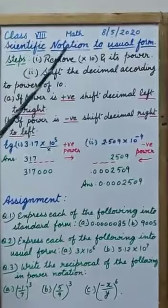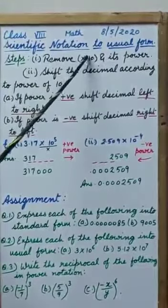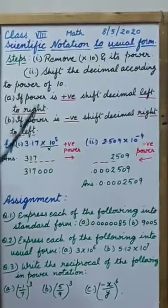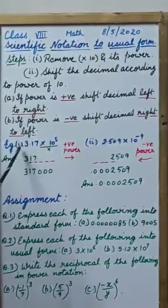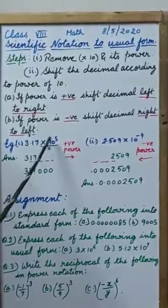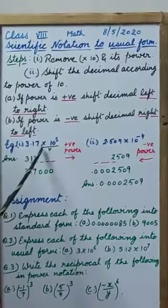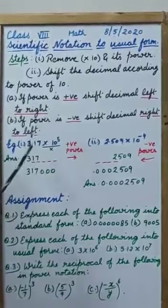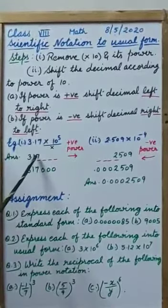First of all, we have to remove multiply by 10 and its part. With the example I am going to explain, I have taken example 3.17 into 10 raised to power 5. So first of all we will remove into 10 raised to power 5 and the remaining part we will write as it is.